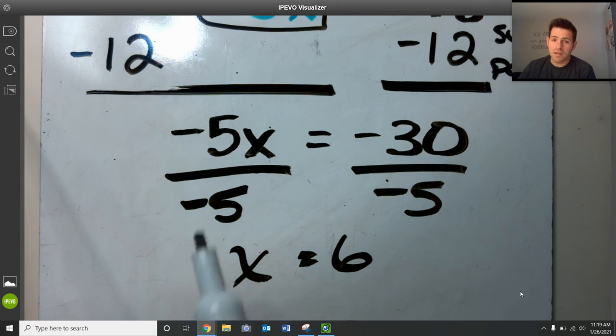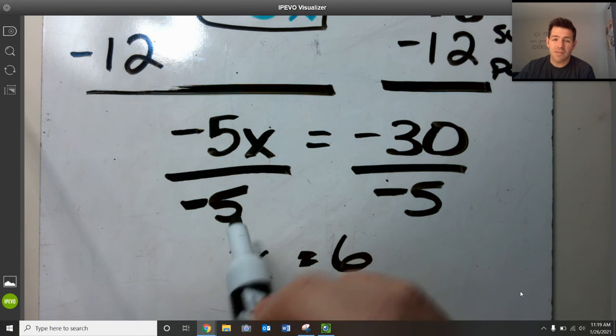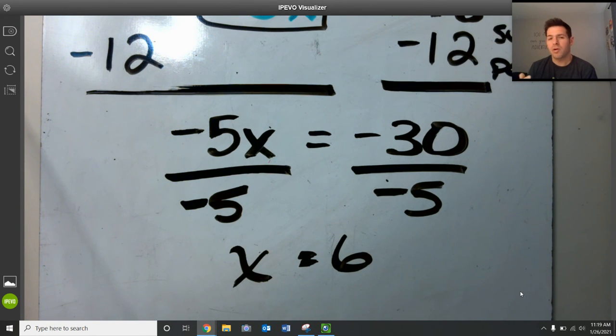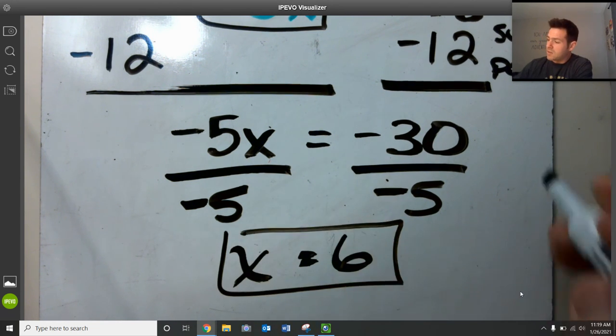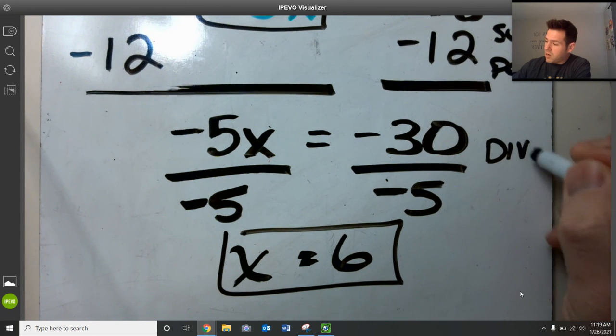Just quickly understand: negative 5 divided by negative 5 gives me 1. Remember when we multiply or divide, property of equality, we want to get a 1 understood in front of that variable there, a positive 1. So we've got x is equal to 6. We just did the division property of equality.